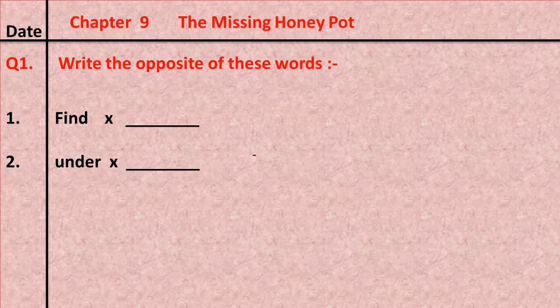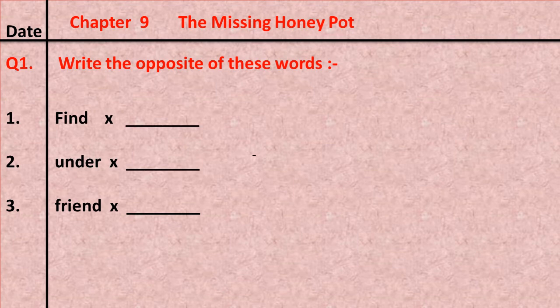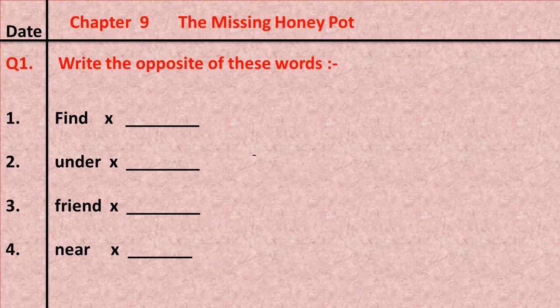Number one: find — the opposite is lose, L-O-S-E. Number two: under — the opposite is over, O-V-E-R. Number three: friend — the opposite is enemy, E-N-E-M-Y. Number four: near — the opposite is far.